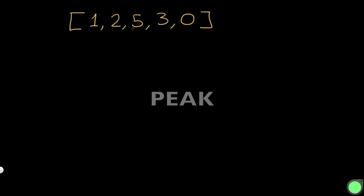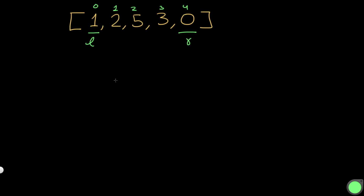Let's go through an example. As with every binary search, we define our search space as the entire array, with pointer L starting at index 0 and pointer R at the last index. Let's label the indices 0, 1, 2, 3, 4. We find the mid index using L + R divided by 2, which here gives us index 2. We then check if mid is a peak.